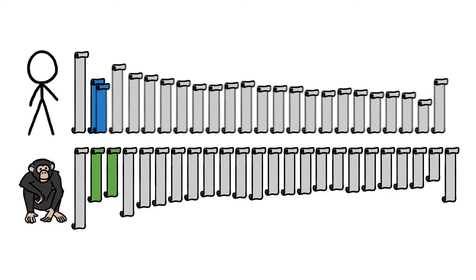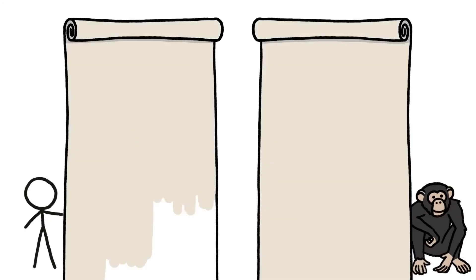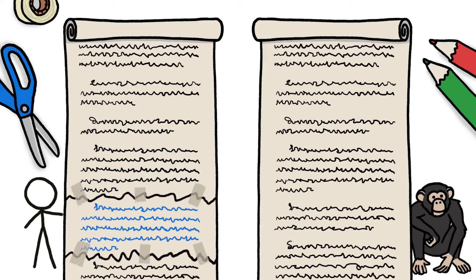Two human scrolls fused, leaving us with 23 pairs of chromosomes to chimps' 24. Other large mutations revised huge sections of text, duplicating a chunk of human DNA here, erasing a chunk of chimp DNA there.